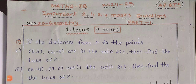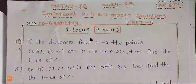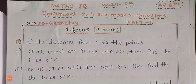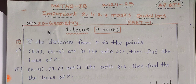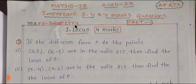We have 3D and 2D geometry — Maths 1B, 2024 to 2025, AP and TS important problems. These are 2, 4, and 7 marks problems covering 3D and 2D geometry.